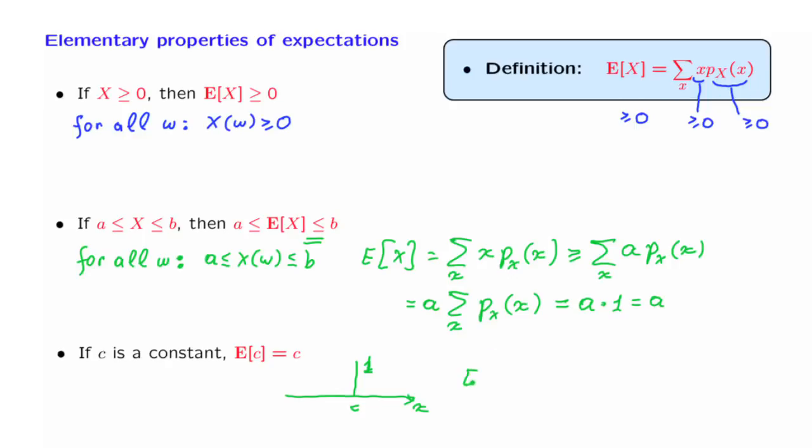This means that in the formula for the expected value, there's going to be only one term in this summation. And that term is going to be c times the probability that our random variable takes the value c. Now, that probability is equal to 1, and we're left with c. So this equality makes sense, of course, as long as you understand that a constant can also be viewed as a random variable of a very degenerate type.